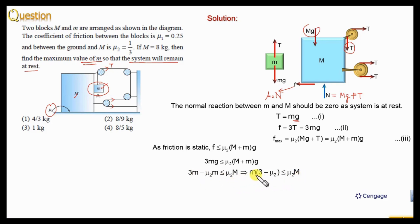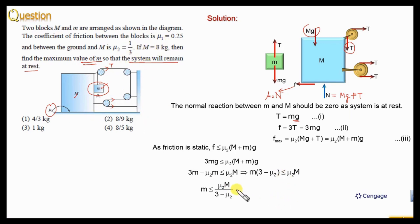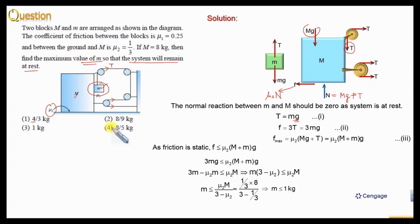Therefore, small m should be less than or equal to mu2 multiplied by capital M divided by (3 minus mu2). Substituting the given values — capital M equals 8 kg and mu2 equals 1/3 — the denominator is 3 minus 1/3, which equals 8/3, and the numerator is also 8/3. That means this value is 1. So the maximum value of small m is 1 kg, meaning the third option is the correct answer.